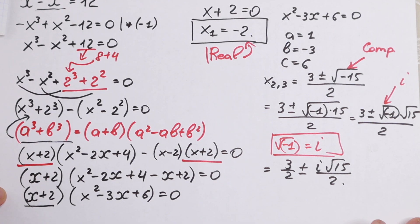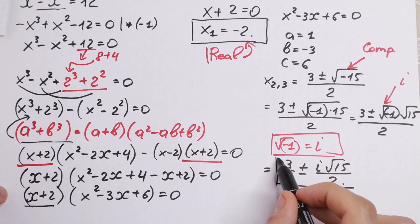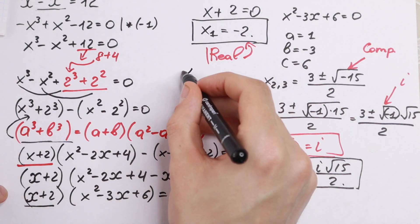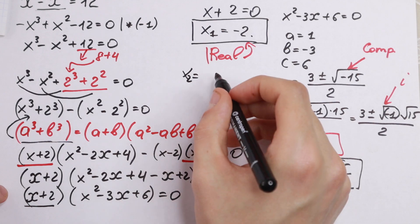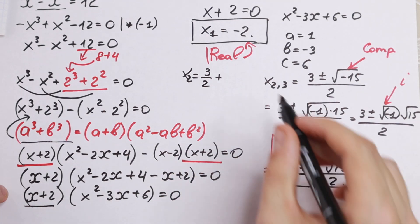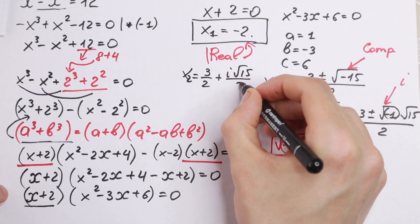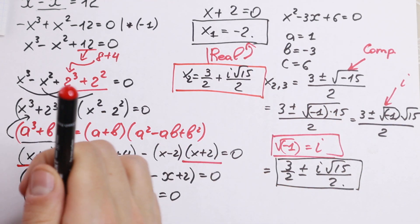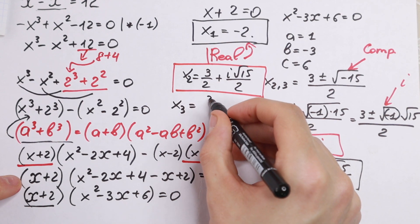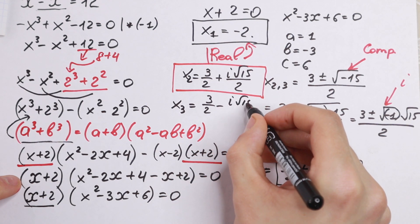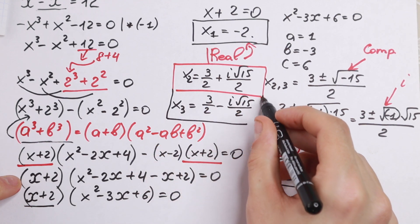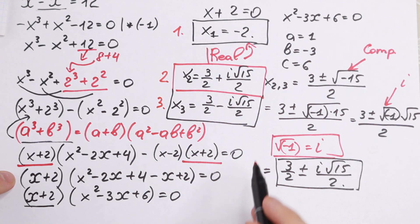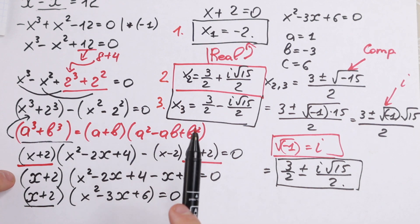So our final answers are: x₁ equal to minus 2; x₂ equal to 3/2 plus i times the square root of 15 divided by 2; and x₃ equal to 3/2 minus i times the square root of 15 divided by 2. The first root is in real numbers and the second and third roots are complex numbers.